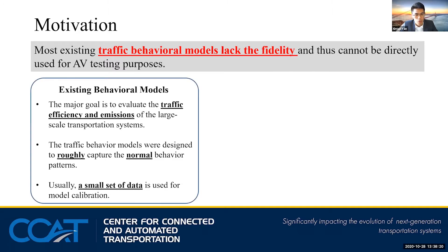The major goal for the existing behavior models is to evaluate the traffic efficiencies and emissions of large-scale transportation systems. Therefore, the traffic behavior models were designed to roughly capture the normal behavior patterns, and usually only a small set of data is used for model calibration.